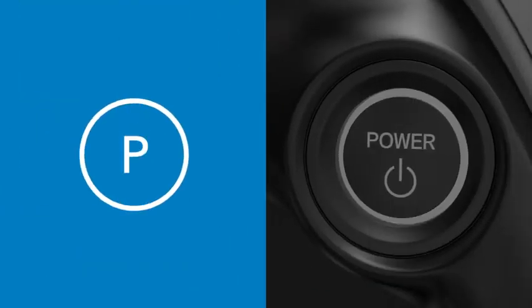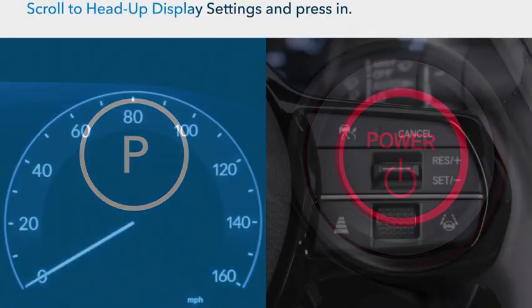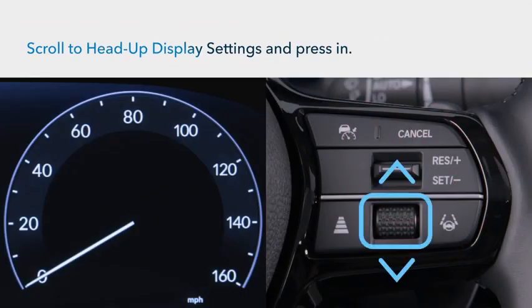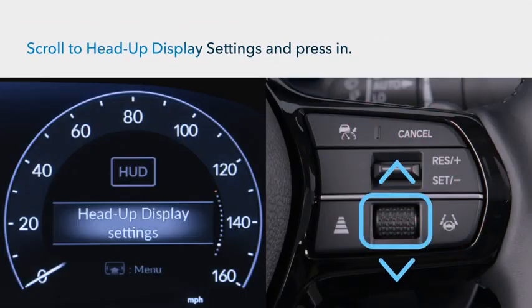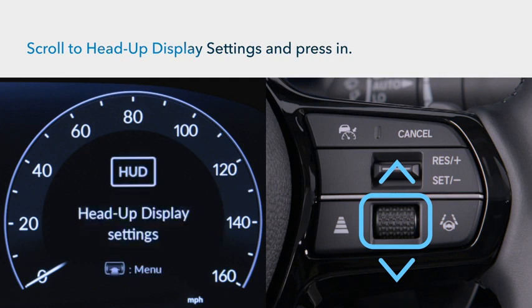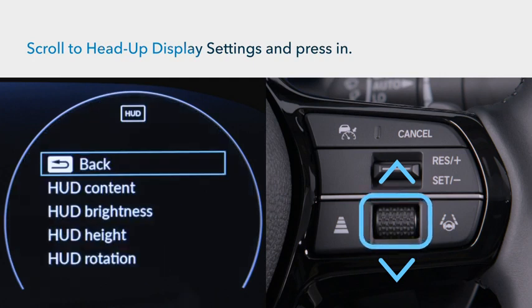First, make sure the vehicle is in park with the power on. Roll the selector wheel on the right side of the steering wheel until head-up display settings appear in the digital instrument cluster and press in to select it.